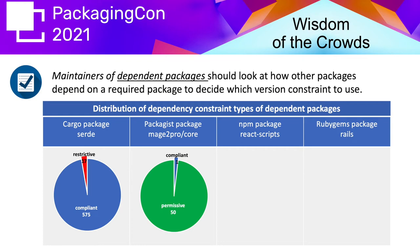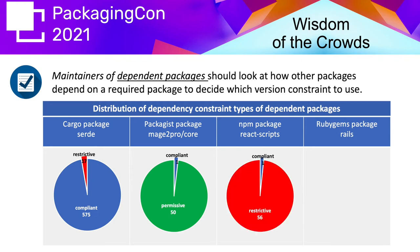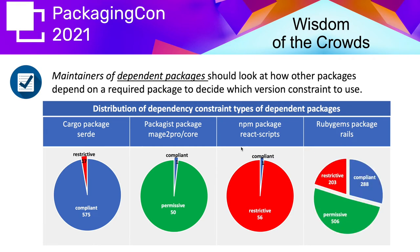The situation can also be different. The NPM package react-scripts does not seem to respect semantic versioning — of 57 dependents, 56 use a more restrictive constraint, so it is probably not safe to use a semantic versioning compliant constraint there. For the popular Rails package in RubyGems, there is widespread variation: more than 50% use a permissive constraint, about one-fourth a compliant one, and 200 use a restrictive constraint. It is probably still safe to use a compliant constraint, since three out of four are semantic versioning compliant.